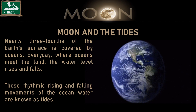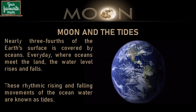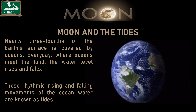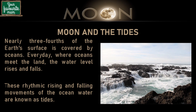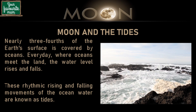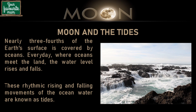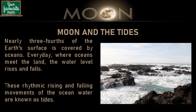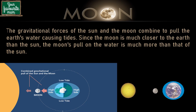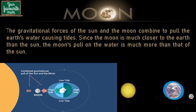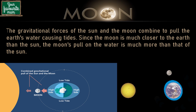Nearly three-fourths of the earth's surface is covered by oceans. Every day, where ocean meets the land, the water level rises and falls. These rhythmic rising and falling movements of ocean water are known as tides. The gravitational forces of the sun and the moon combine to pull the earth's water causing tides. Since the moon is much closer to the earth than the sun, the moon's pull on the water is much more than that of the sun.